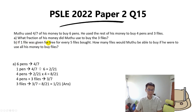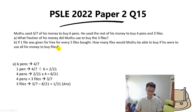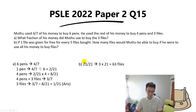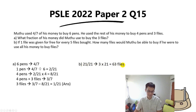For Part B: if one file is given free for every five files bought, how many files could Mutu buy if he used all his money on files? We know 1/21 can buy three files, so the total money can buy 3 times 21, which is 63 files.